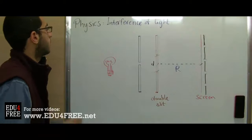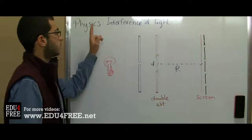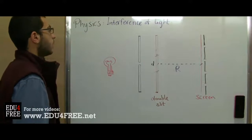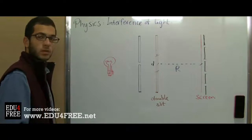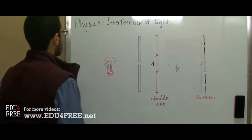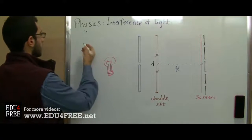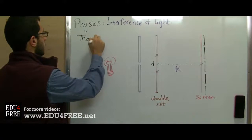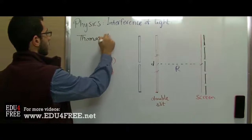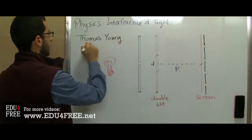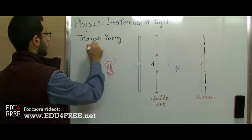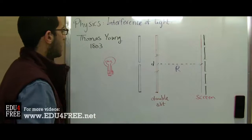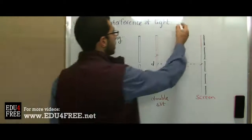Assalamu alaikum. Today we will talk about the interference of light, and when we talk about the interference of light we must talk about the experiment which was performed by the scientist Thomas Young in the year 1803, and this is called the double slit experiment.